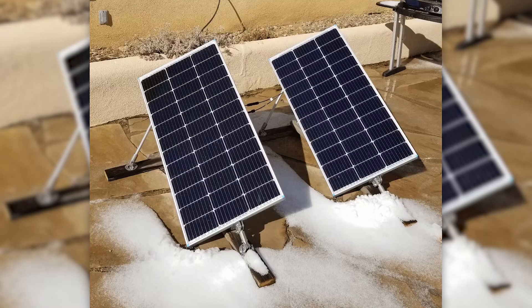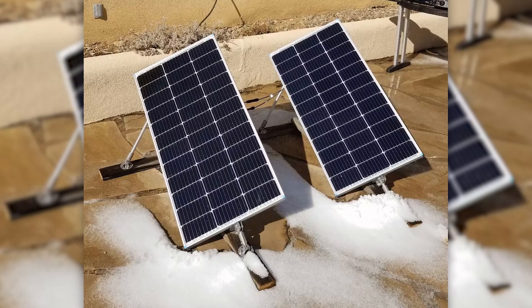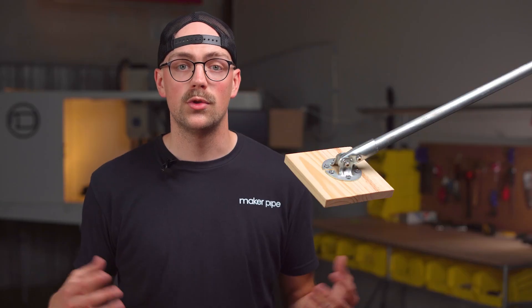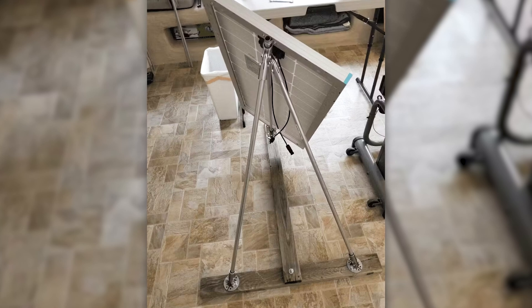Jim built these adjustable solar panel stands that are made to swivel and manually track the sun. The solar panels need to be angled towards the sun so he used a few of the adjustable angle flanges to securely mount the framework to wooden planks.